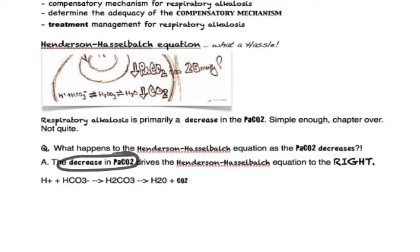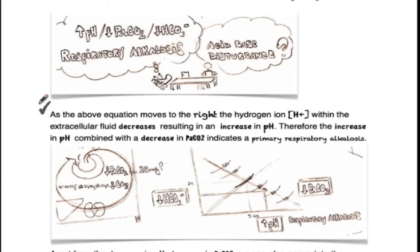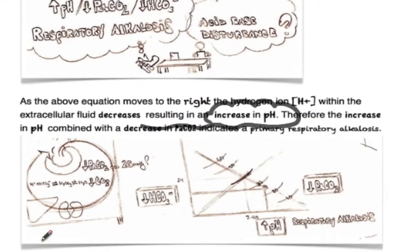The decrease in PaCO2 drives the Henderson-Hasselbalch equation to the right. As the above equation moves to the right, the hydrogen ions within the extracellular fluid decreases, resulting in an increase in pH.